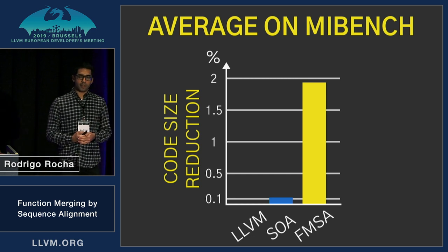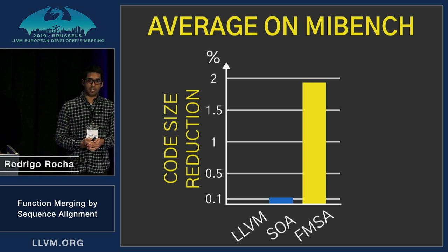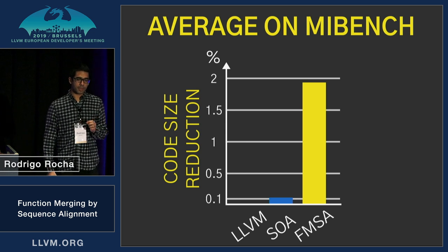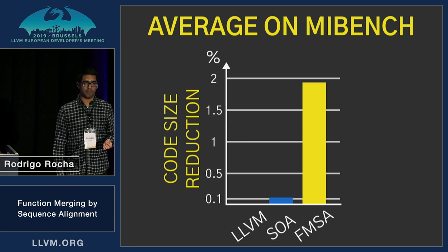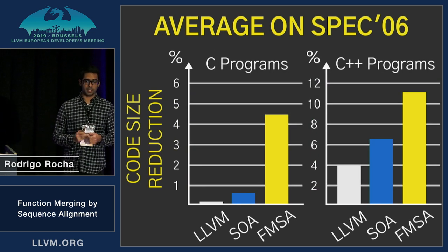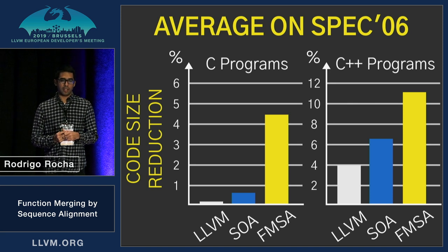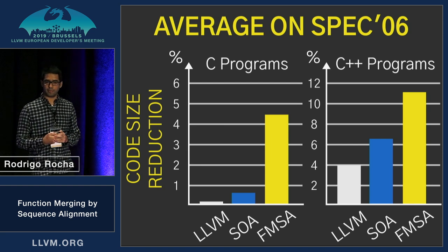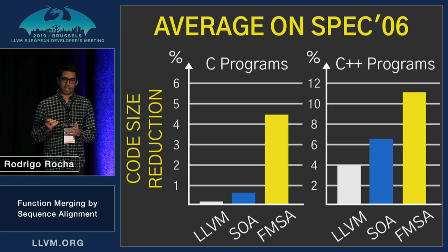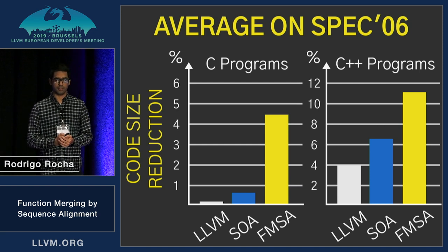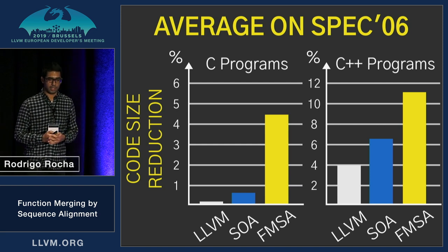In MiBench, it's interesting because none of the previous techniques were able to achieve any meaningful result. The main reason is that most of these benchmarks are quite small, so we don't have very trivially similar functions. Another reason is that most programs in MiBench are C programs. If you look at the C programs in the SPEC benchmarks, you'll see the previous techniques did quite poorly there as well — most of the benefits for merging trivially similar functions from the other techniques came from templates. But we also did quite well in these C programs, so that's why we were able to achieve this kind of results.